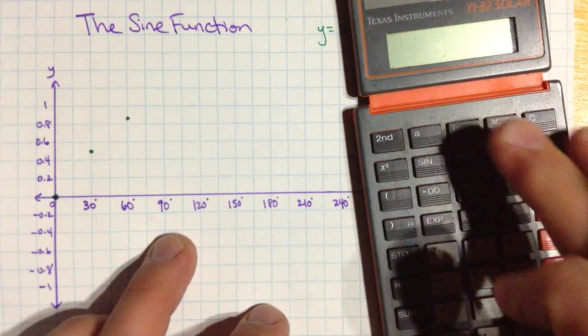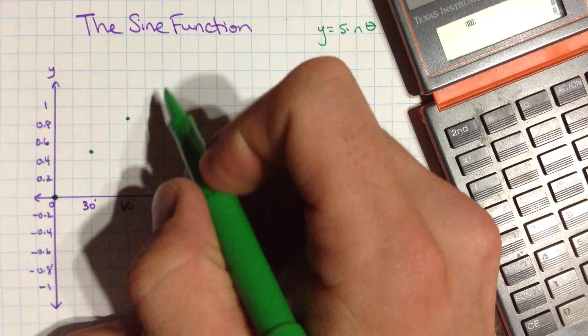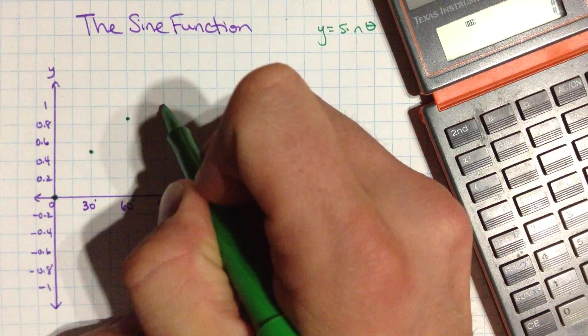And then I try 90, and oh, that's 1. Okay, that's a nice one, and that makes sense too. That's the top of the unit circle.